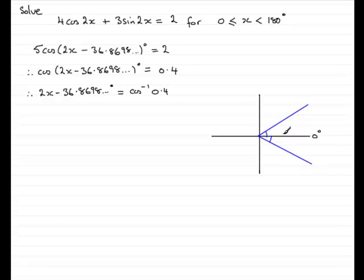Now, what we need to do is, first of all, find out what we get when we inverse cosine 0.4. So let's just do that. And if we do that on a calculator, make sure your calculator is in degrees mode. If you inverse cosine 2 fifths, or 0.4, you should find that you get 66.4218, and so on, degrees.